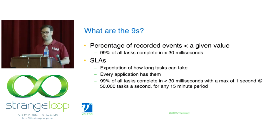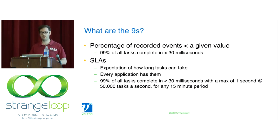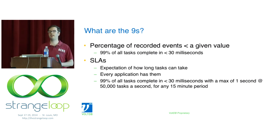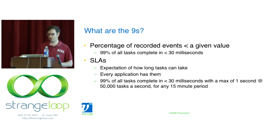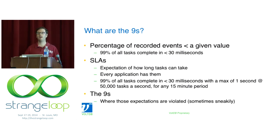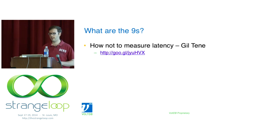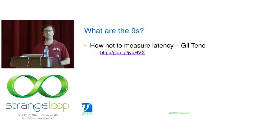A fairly complete SLA specifies a percentile and a maximum, but people frequently leave off the arrival rate, as well as over what period the SLA is valid. Even specifying an arrival rate of 50,000 transactions a second is incomplete — in the real world, tasks don't arrive in an even or normal distribution. The nines I'm talking about are the different ways those expectations are violated, and sometimes your measurements are even hiding that. Gil Tene has a great talk, 'How Not to Measure Latency,' about various measurement errors.